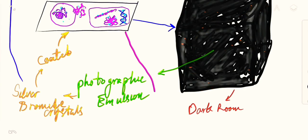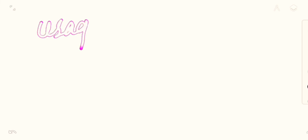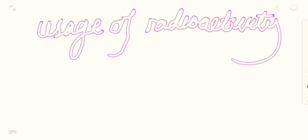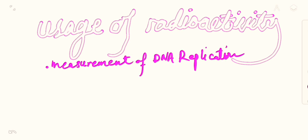And then this silver coated slide could be studied either through a light microscope or a transmission electron microscope. The usage of radioactivity in autoradiography can be either measurement of the DNA replication in the cells or in the cells of a specific tissue.